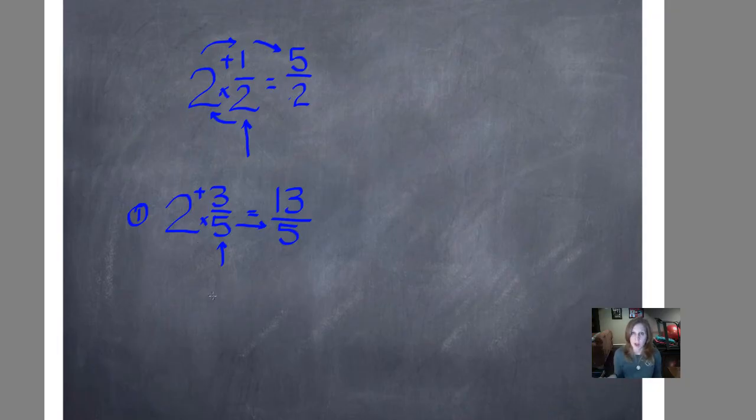We're back again where we can always check what we're doing by converting it from a mixed number to an improper fraction and then back the other way again.